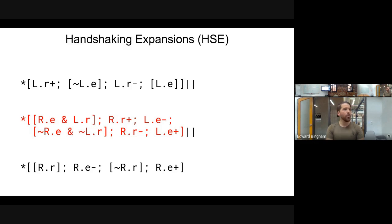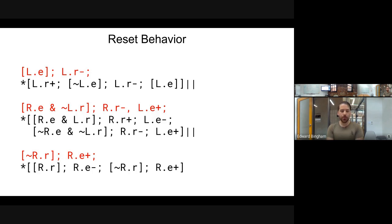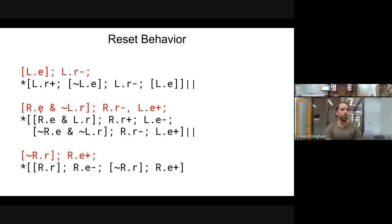There are two more steps we need to take after expanding these out. The first step is to add some initial rules for reset. For variables that are driven by the process, you need to drive their values before entering the main loop, and for variables not driven by the process, you need to wait for them to have their associated value assumed from the environment.